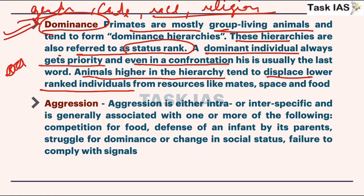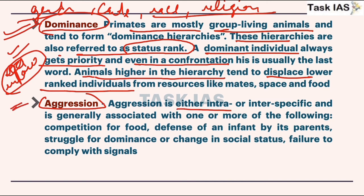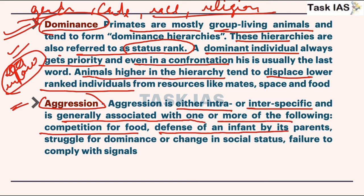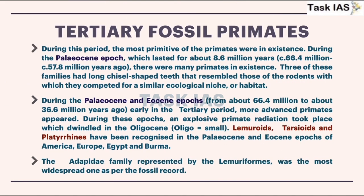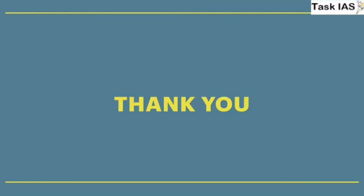Hierarchical features are referred to as status rank. A dominant individual always gets priority, and in confrontation, animals higher in hierarchy tend to displace lower-ranked individuals in getting resources like food and preference in mating. Aggression is either intraspecific or interspecific and is generally associated with competition for food, defense of an infant by parents, struggle for dominance, change in social status, failure to comply with signals given by dominant individuals, and sometimes selection of a mating partner.